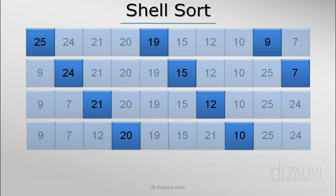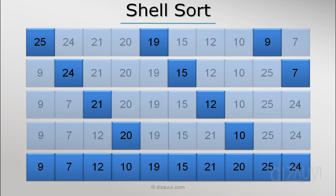Now our first pass is over, and this is how the array looks like after the first pass. But as you can see, the array is not completely sorted.